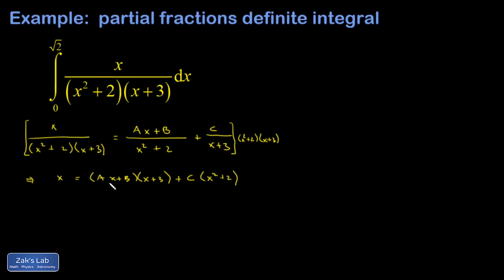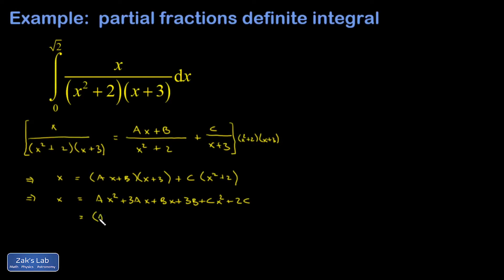It's not so bad to just expand everything on the right-hand side and then do a comparison of coefficients. So I have Ax² + 3Ax + Bx + 3B + Cx² + 2C. I'm going to collect all the quadratic terms — that's just (A + C). Then my linear terms are 3Ax and Bx, so (3A + B)x. I'll cross out every term I've taken care of so I don't miss anything.